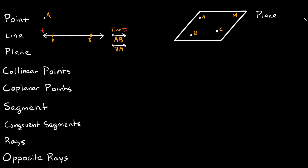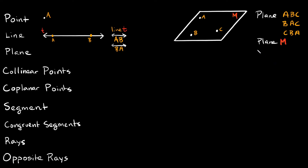So if you wanted to name this plane, you would name it as plane ABC, or you could mix these letters however you want — BAC, CBA, whatever you want. The order doesn't really matter here. Another way you could name this plane is by calling it plane M, because we have this letter that's basically labeling this plane. Whenever you see a letter that's just on your plane with no point, we know that it's just a label. That's why we can call this plane M.